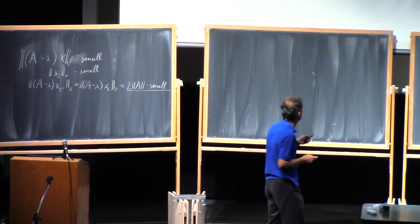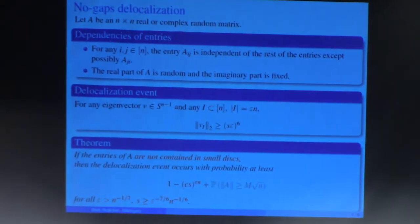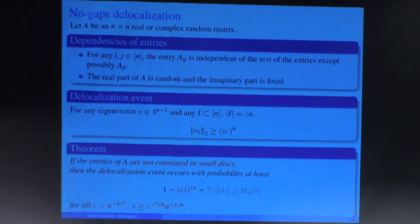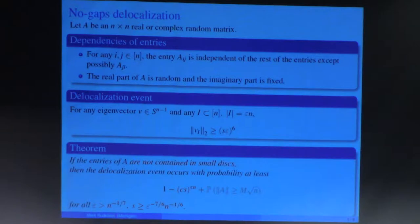So our delocalization theorem is actually a result not about eigenvectors, but about approximate eigenvectors. Second, we have this term that norm A showing that the norm of A should not be too large. And sometimes it's not convenient. For example, if I take a matrix with iid entries whose expectation is not zero, then the typical norm will be about N, not about square root of N.